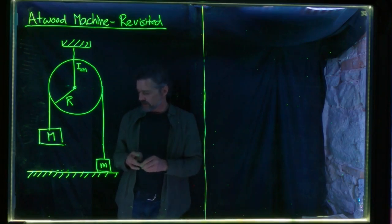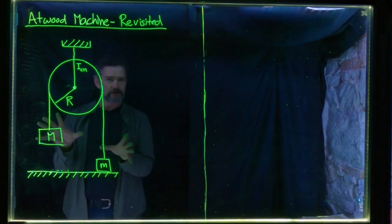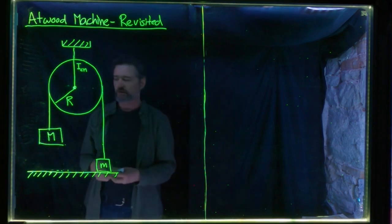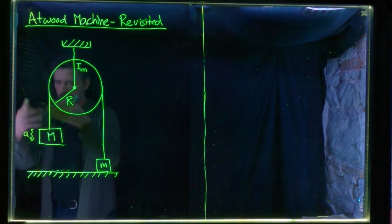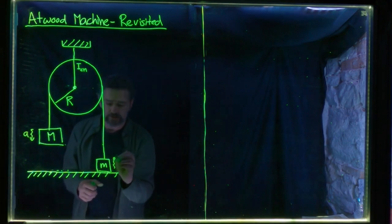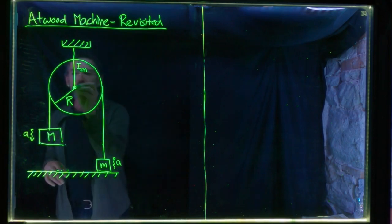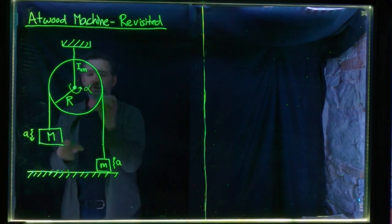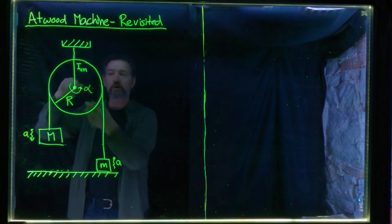When we release this system from rest, everything will accelerate with a constant acceleration. Big M will experience a constant acceleration downwards, moving faster and faster. Little m will experience exactly the same magnitude of acceleration upwards. At the same time, this pulley will undergo a constant angular acceleration alpha, picking up angular velocity at a constant rate.